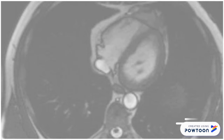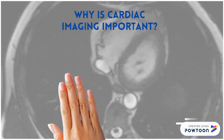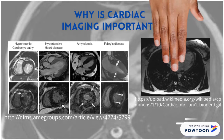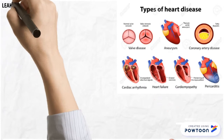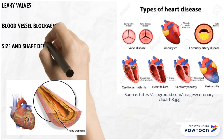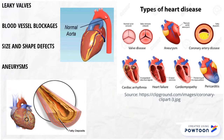Why is cardiac imaging so important? The heart is one of the most important organs in the body and is vulnerable to conditions which are difficult to diagnose without images and which require continuous monitoring. These conditions include heart disease, leaky valves, blockages in blood vessels, aneurysms, and defects in size and shape of the heart.